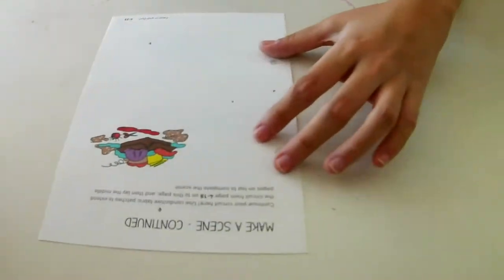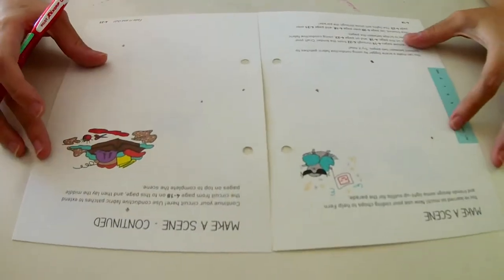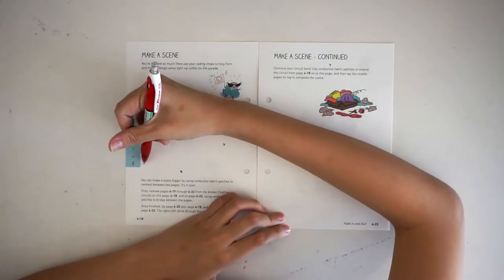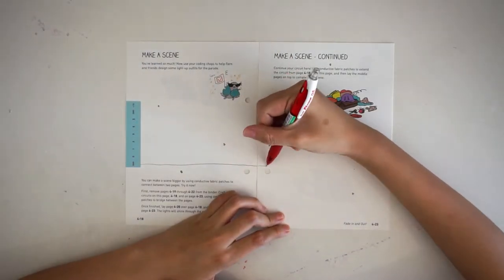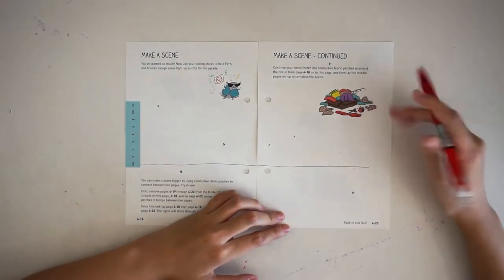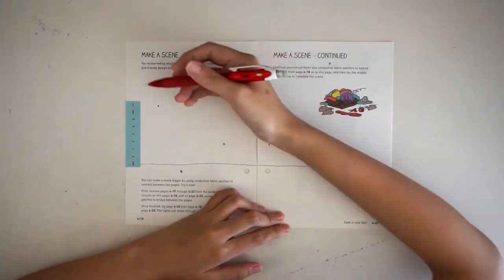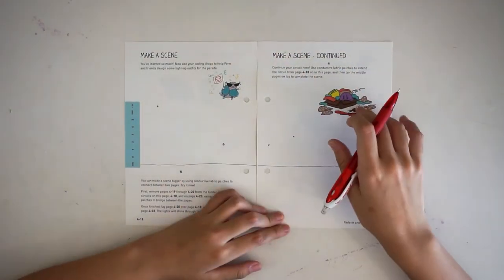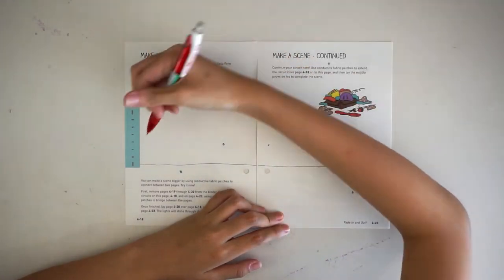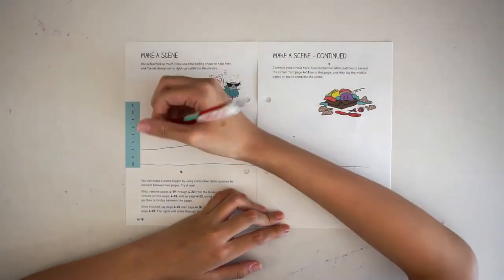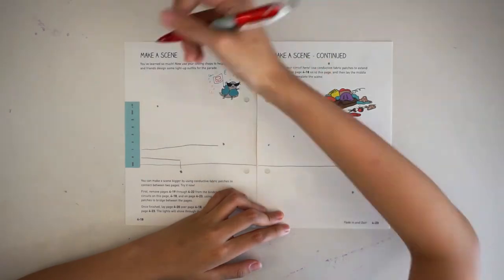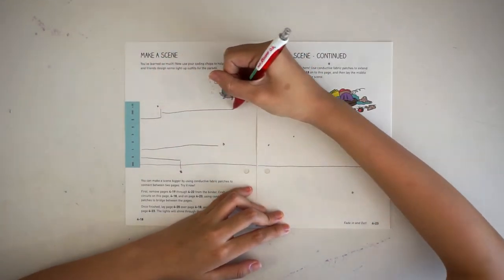Now we butt page 4-18 right against page 4-23 and sketch out our circuit. First, we draw the ground trace. We do this first because all the LEDs must eventually connect to the ground trace. Then we draw lines between the six signal pins of the chibi chip to the various spots that we want to place a chibi light.